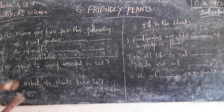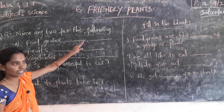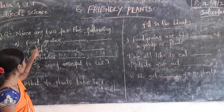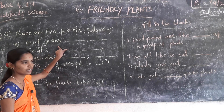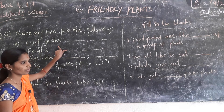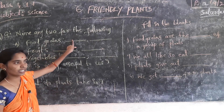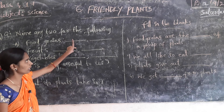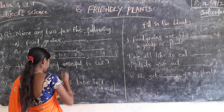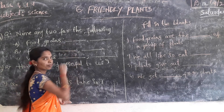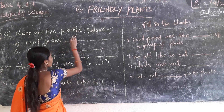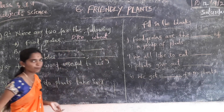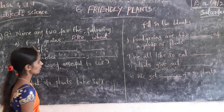Let us see the first question: Name any two examples for the following. First — food grains. Food grains are seeds, small seeds. Examples: rice, wheat, maize, corn. Write any two — rice and wheat. These are food grains.